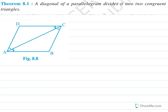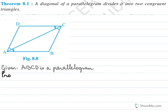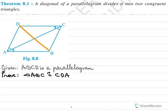A diagonal of a parallelogram divides it into two congruent triangles. We are given a parallelogram and we need to prove that the diagonal divides it into two congruent triangles. If we have diagonal AC, the two triangles are triangle ABC and triangle CDA. If we have diagonal DB, we need to show triangle ABD is congruent to triangle CDB.